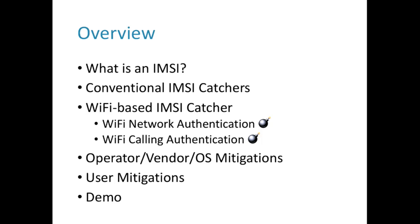We're going to talk about conventional IMSI catchers. IMSI is basically the identifier inside that identifies a subscriber — the International Mobile Subscriber Identifier — and there are conventional devices that have been around for a while, ones with trade names like Stingray, that work in the mobile spectrum. But our approach operates in Wi-Fi and it basically exploits two issues: two functionalities within the way smartphones automatically connect to Wi-Fi networks based on their IMSI, and another technique based around when devices connect to operator services for Wi-Fi calling.